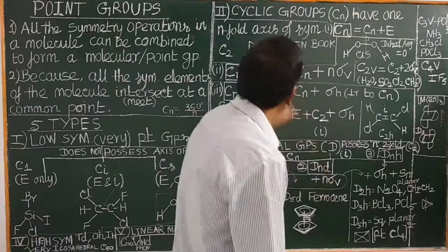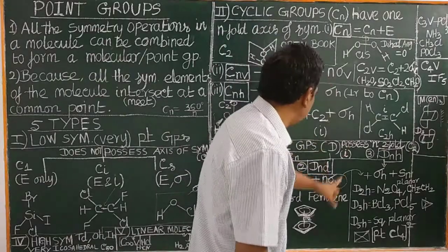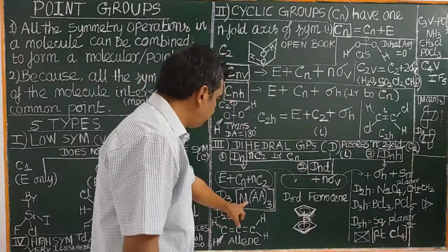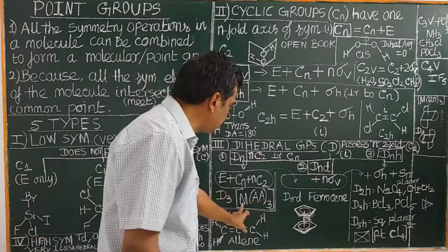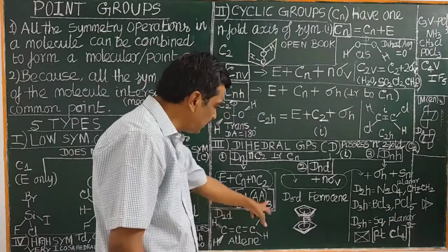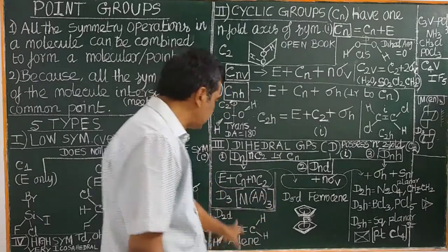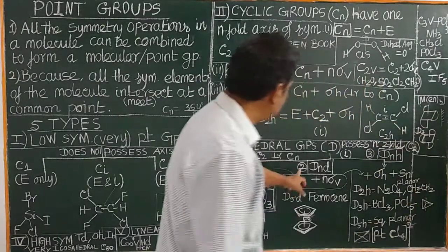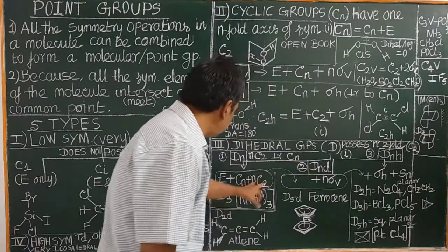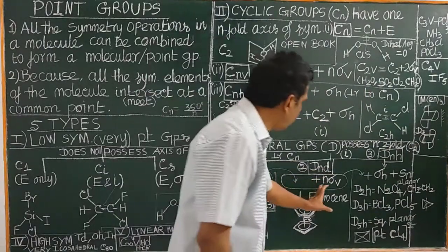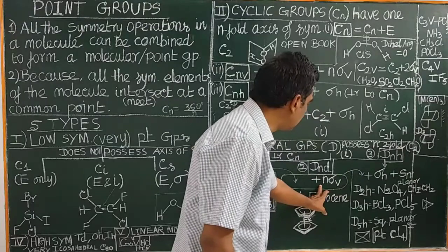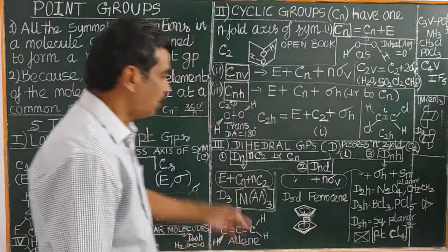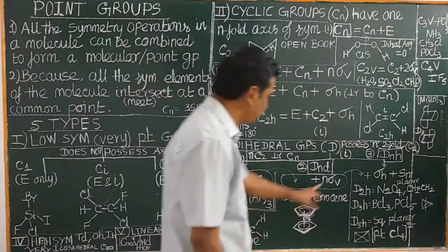DnD includes N sigma D planes. Examples of DnD point groups include metal ethylene and tris-ethylene-diamine complexes. In DnD, in addition to the n sigma D planes, the group elements also include improper rotation axes.